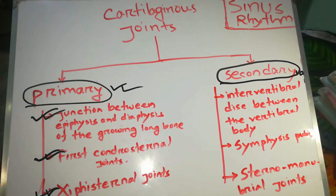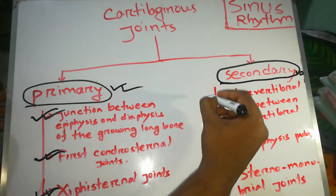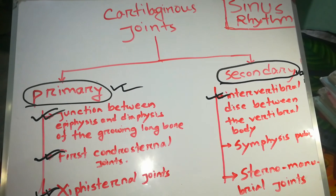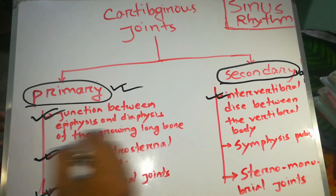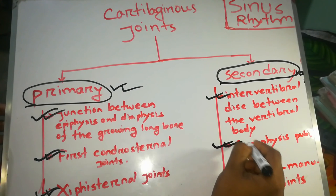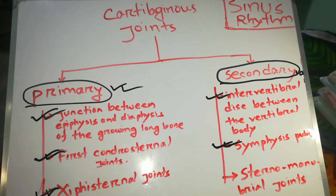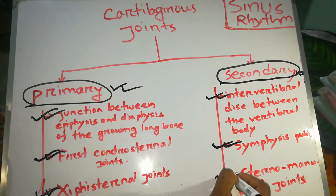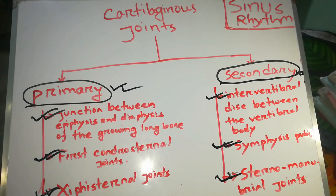Intervertebral discs between the vertebral body — this is the secondary cartilaginous joint. This includes the symphysis pubis and the sternal manubrial joint. These are the examples of the secondary cartilaginous joint.